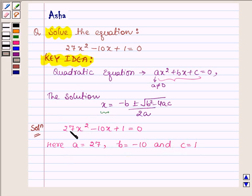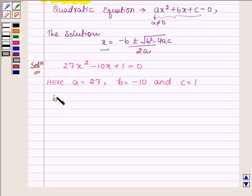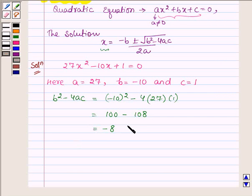To find the solution of this quadratic equation, first let us find the value of b² - 4ac. Now b² - 4ac = (-10)² - 4(27)(1) = 100 - 108 = -8. Now -8 can be written as 8(-1), and -1 is iota², so b² - 4ac = 8 iota².